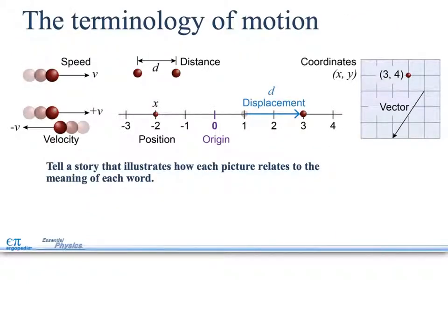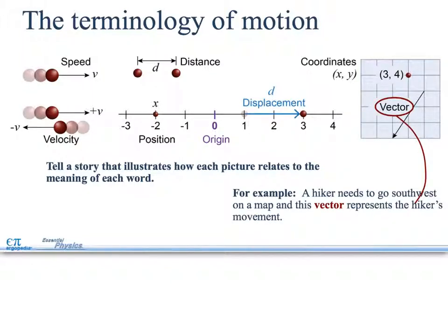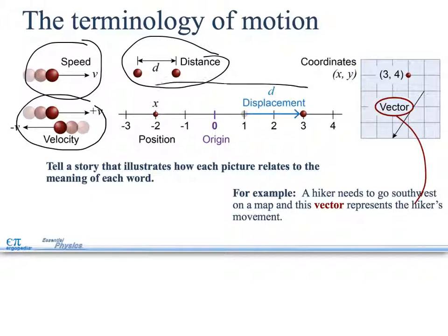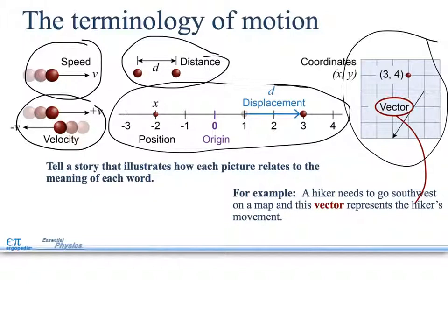So, tell a story that illustrates how each picture relates to the meaning of each word. For example, a hiker needs to go southwest on a map and this vector represents the hiker's movement. I'm just wanting you to be able to verbalize. Here you have velocity heading or speed heading in the positive direction. Here you have distance. Explain to me what distance is. Explain what this velocity is. And then explain what this is. And then the last one is that. These are just things I want you to be able to verbally communicate what's happening.